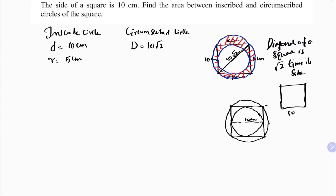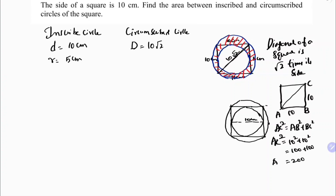We can verify using the Pythagorean theorem: if we name the vertices A, B, C, then AC² = AB² + BC² = 10² + 10² = 100 + 100 = 200, so AC = √200 = 10√2. The diagonal is 10√2, so the radius of the circumscribed circle is 10√2 ÷ 2 = 5√2.